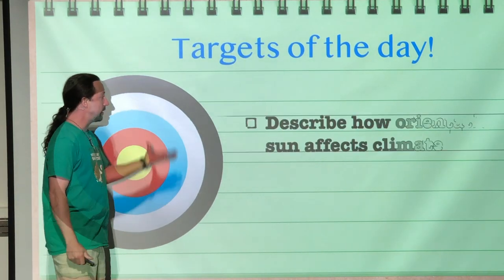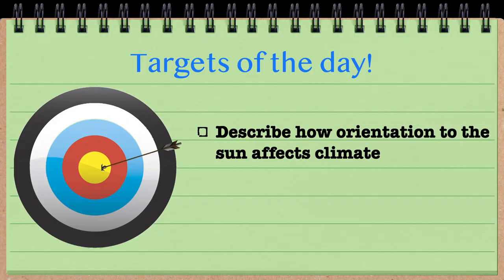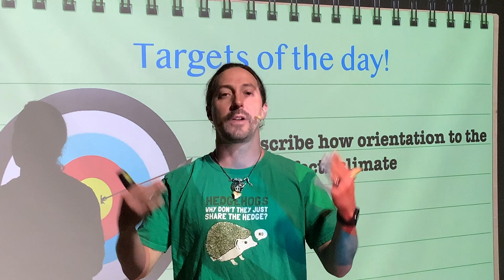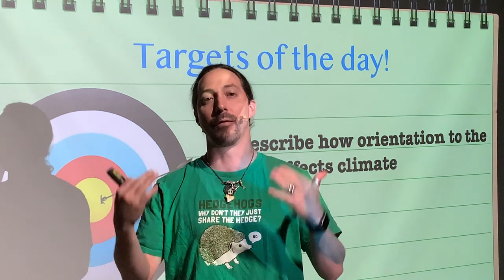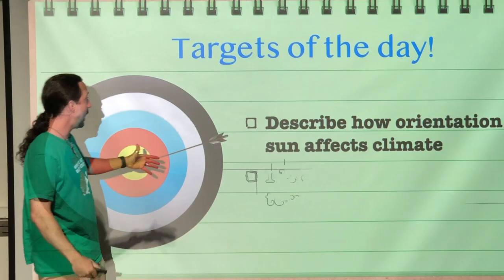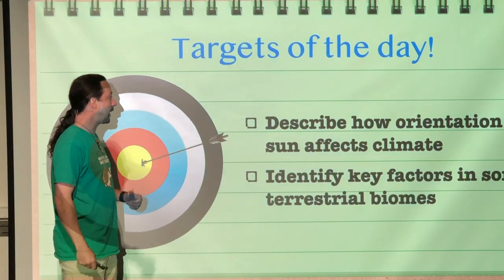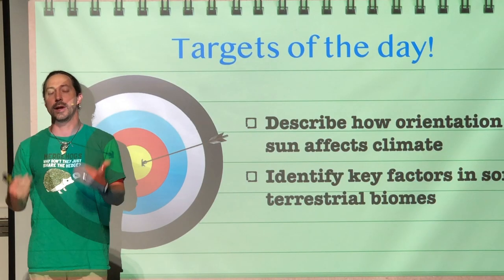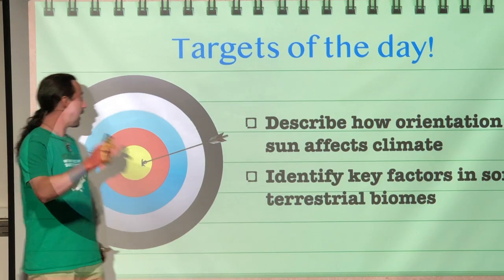So the target of the day: describe how orientation of the earth to the sun is actually going to affect climate, or in other words, affect the amount of energy from the sun that those different areas are going to get. And then we're going to identify key factors in some of the major terrestrial biomes, just outlining what main features they might have.